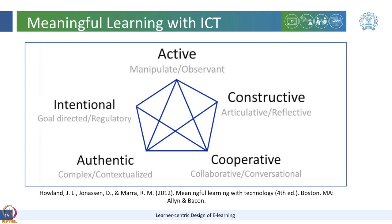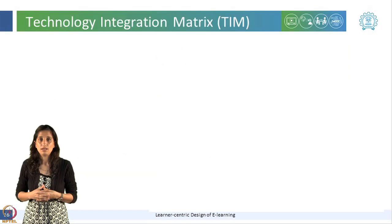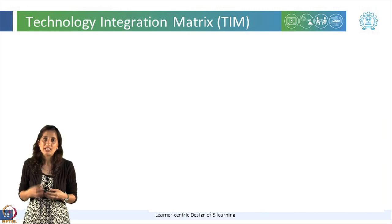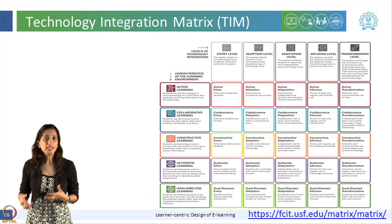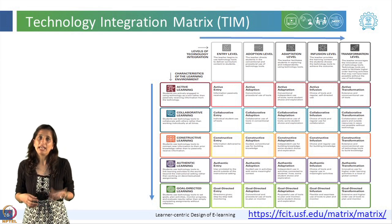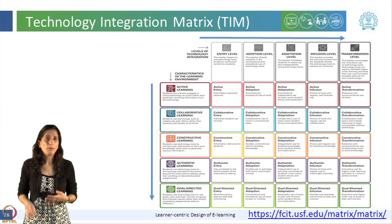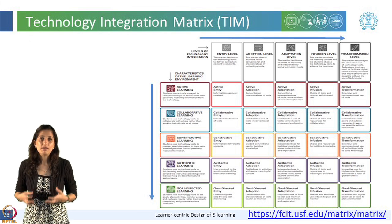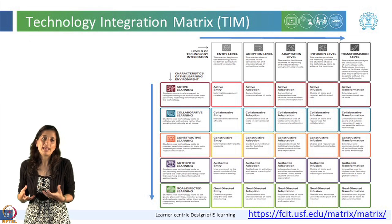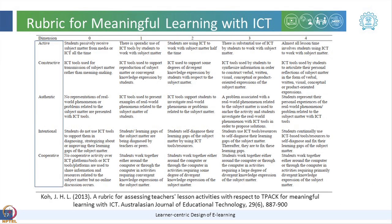In our course, we have covered most aspects of these five dimensions of meaningful learning with ICT. Based on this theory, a framework named the Technology Integration Matrix has been developed to measure five levels of technology integration: entry, adoption, adaption, infusion, and transformation. This matrix incorporates five interdependent characteristics of meaningful learning environments associated with these five levels, creating a matrix of 25 cells to assess technology integration. A rubric based on this theory can also act as a design scaffold to incorporate effective integration of technology into e-learning design, leading to meaningful learning.